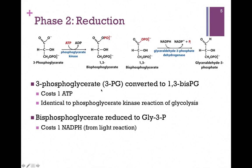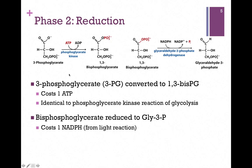Now we move to the simple reactions of phase 2, reduction. We take each of those 3-phosphoglycerate molecules and add another phosphoryl group from ATP — this is our first ATP cost — forming bisphosphoglycerate. This is then reduced, and we remove that phosphoryl group to create glyceraldehyde-3-phosphate. Since we're reducing the molecule, we need a source of electrons, so we oxidize NADPH. This shows why we needed the ATP and NADPH from non-cyclic electron flow. These steps must be carried out for every molecule of 3-phosphoglycerate, each yielding one molecule of glyceraldehyde-3-phosphate.